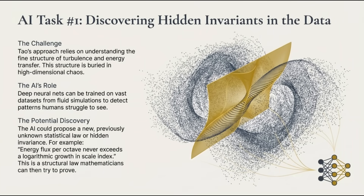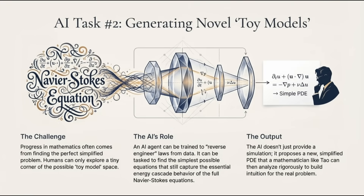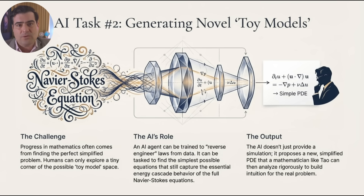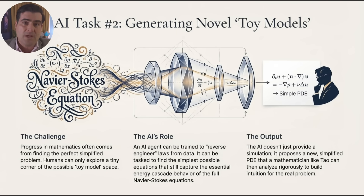How does this partnership actually work? The AI follows Tao's roadmap in two specific ways. First, it acts as a pattern hunter — it analyzes massive data sets of turbulent simulations to find those hidden invariants, the statistical norms, the laws that humans simply can't see amidst the noise. Secondly, the AI helps build better toy models, more accurate ones, to help reverse-engineer data and propose new simplified equations for mathematicians and physicists to study. In this way, AI is helping bridge the gap between the unsolvable real world and the solvable but incomplete toy models — checking the math, probing for weaknesses, and guiding human researchers toward the final proof.